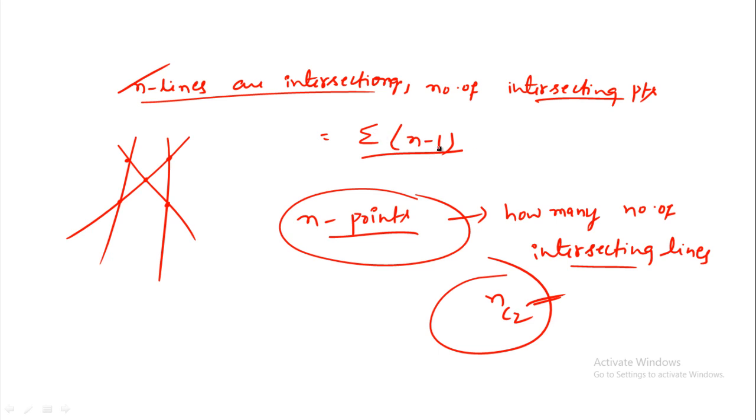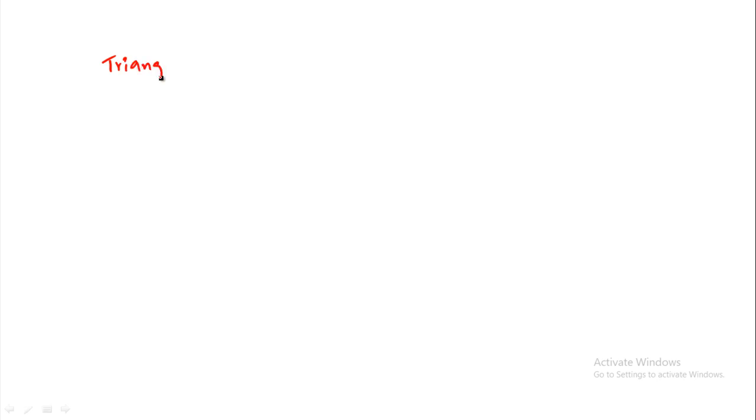Here is the basic thing. The next concept is triangles. A triangle has three points, and you can see many points forming a triangle.